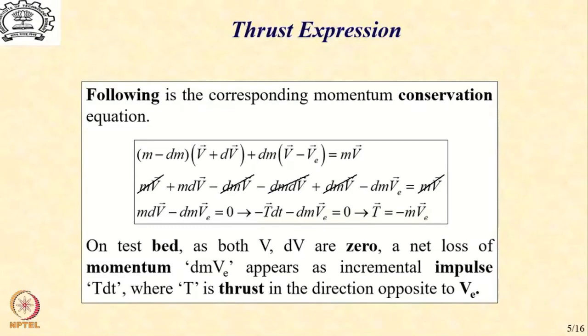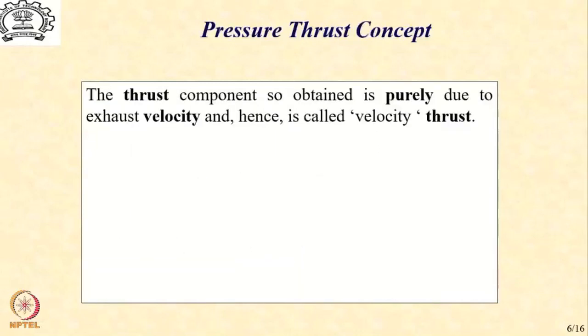On the test bed, both v and dv are 0 because the rocket does not move. The net loss of momentum dm·v_e appears as incremental impulse, which is like a force. On the test bed, this force is resisted by support system as a reaction, and typically that reaction is measured as an indicator of the amount of thrust the rocket motor is generating. The thrust component so obtained is purely due to the exhaust velocity and also called the velocity thrust.